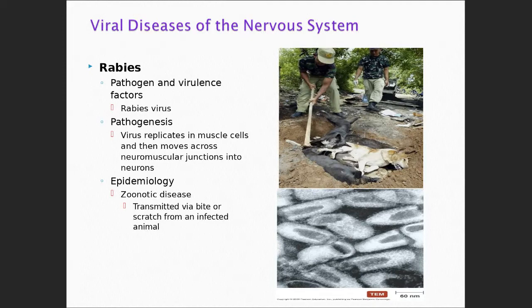I'm 99.9 percent sure if you see a bat in Austin, Texas in the daytime flopping on the ground, it has rabies. You need to know for the exam that we worry about rabies in Austin, Texas because of bats — we have a lot of them here. Do not touch it. Call animal control, because you or your child may have to take the vaccine.